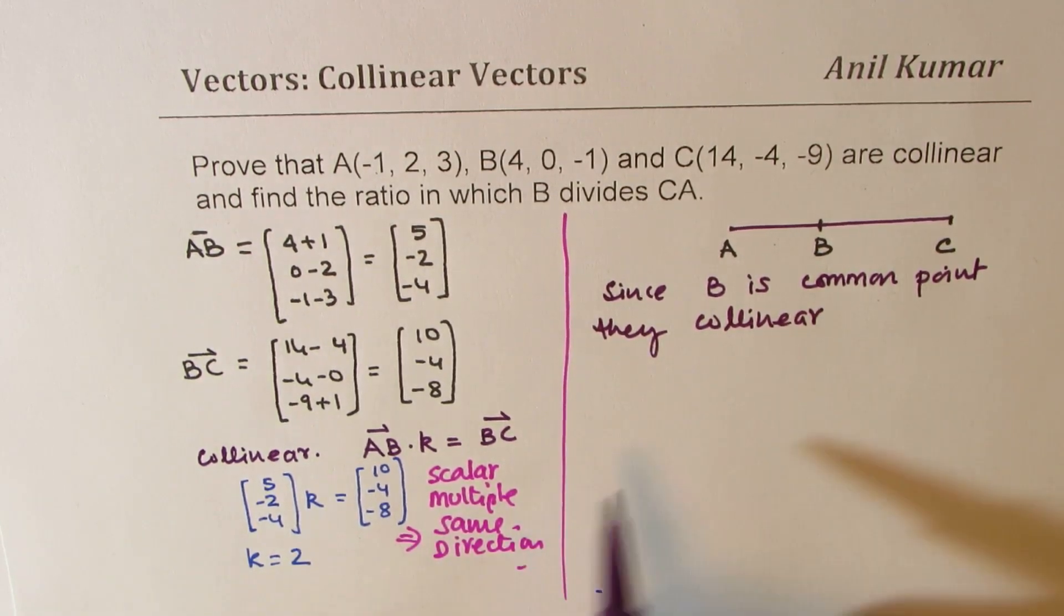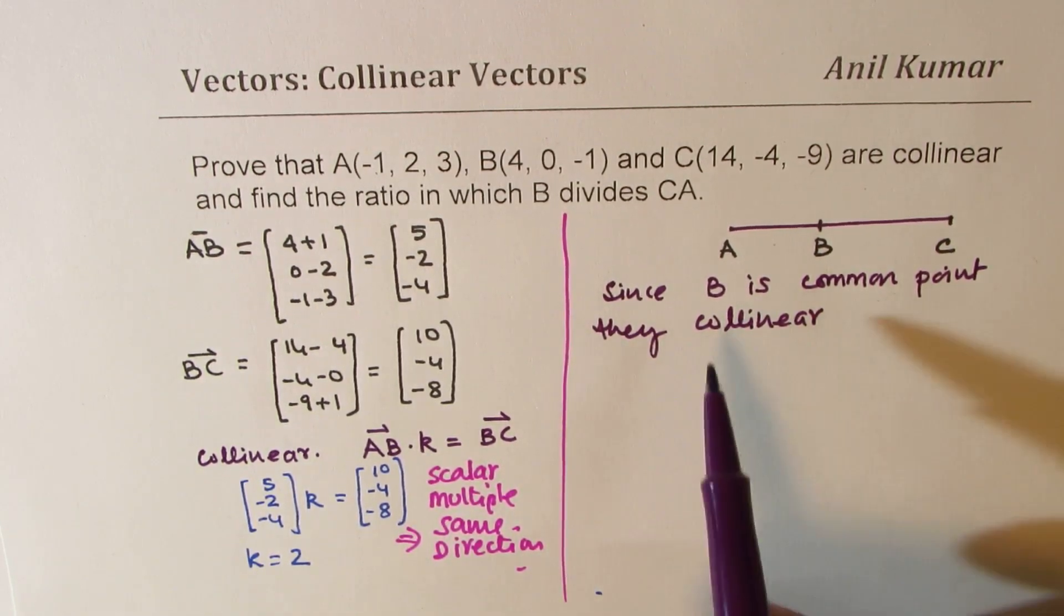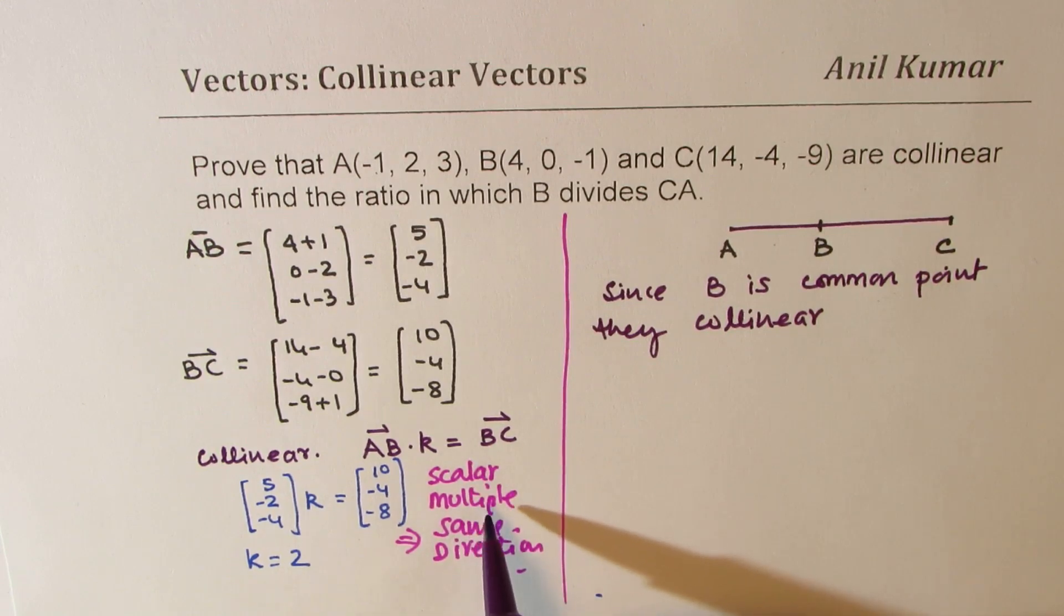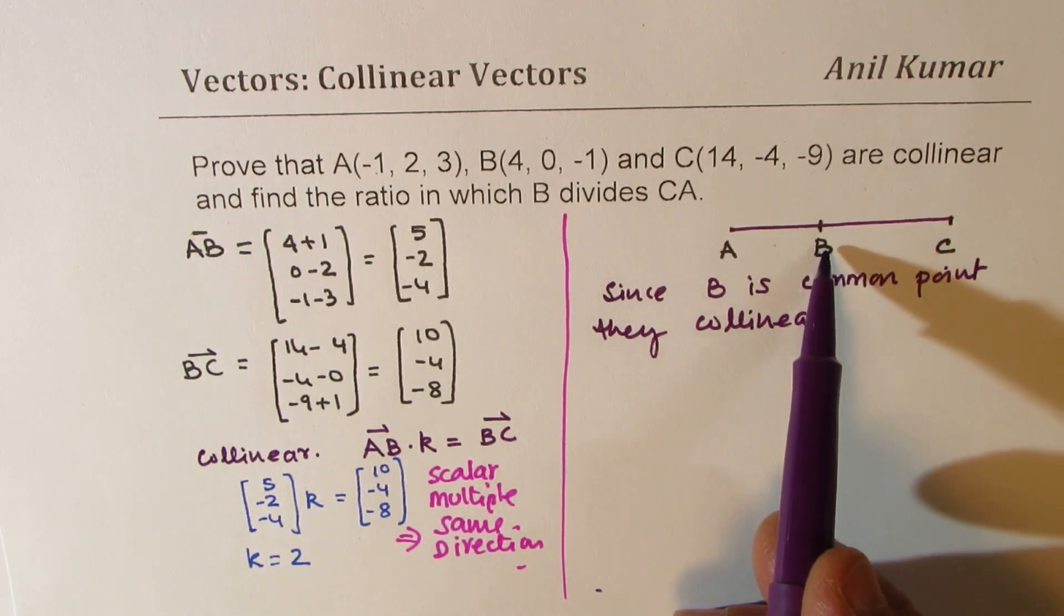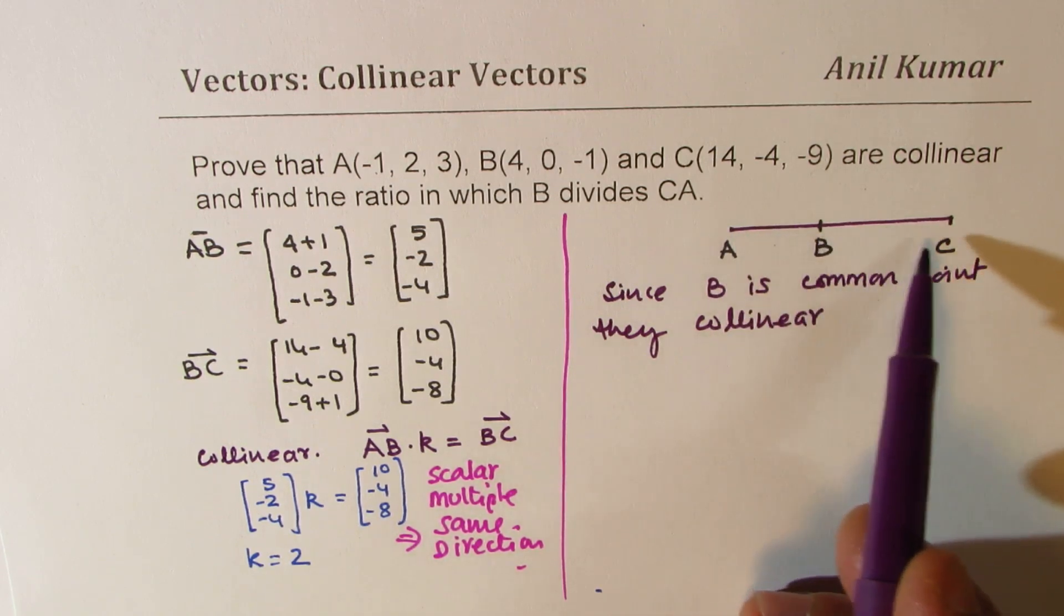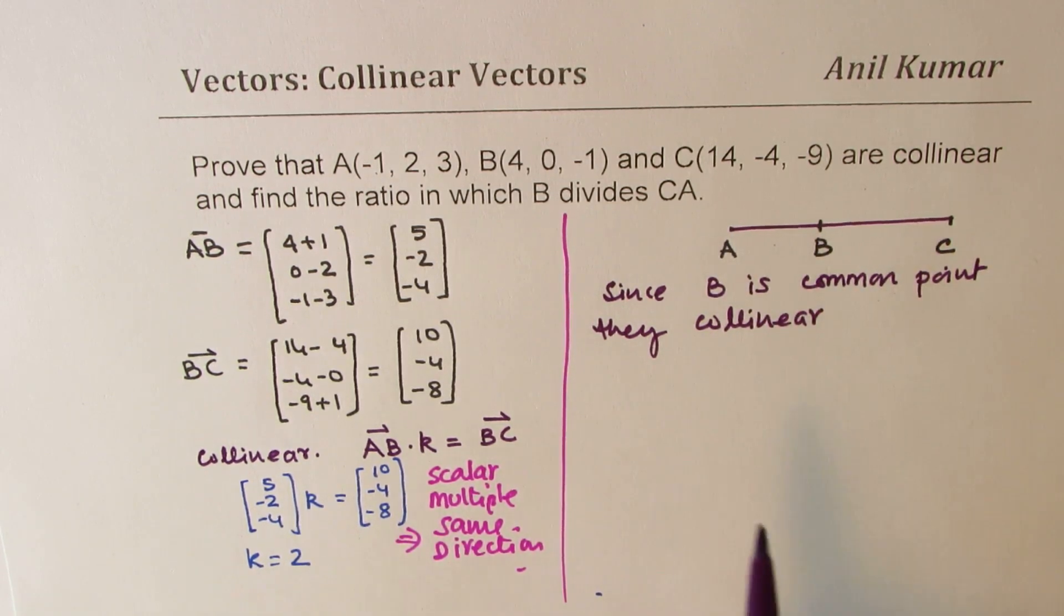So both the things combine together. One, they are scalar multiples, that means they are in the same direction and then B is a common point. So we have done part A of this question.